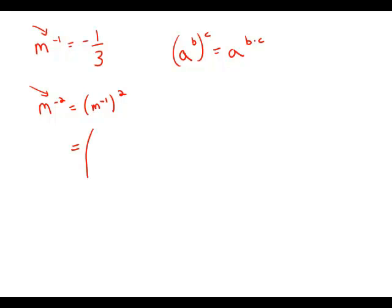Well, that makes it very easy to figure out because m to the negative 1 is negative 1 third. And negative 1 third squared is positive 1 ninth. And this is answer choice D.